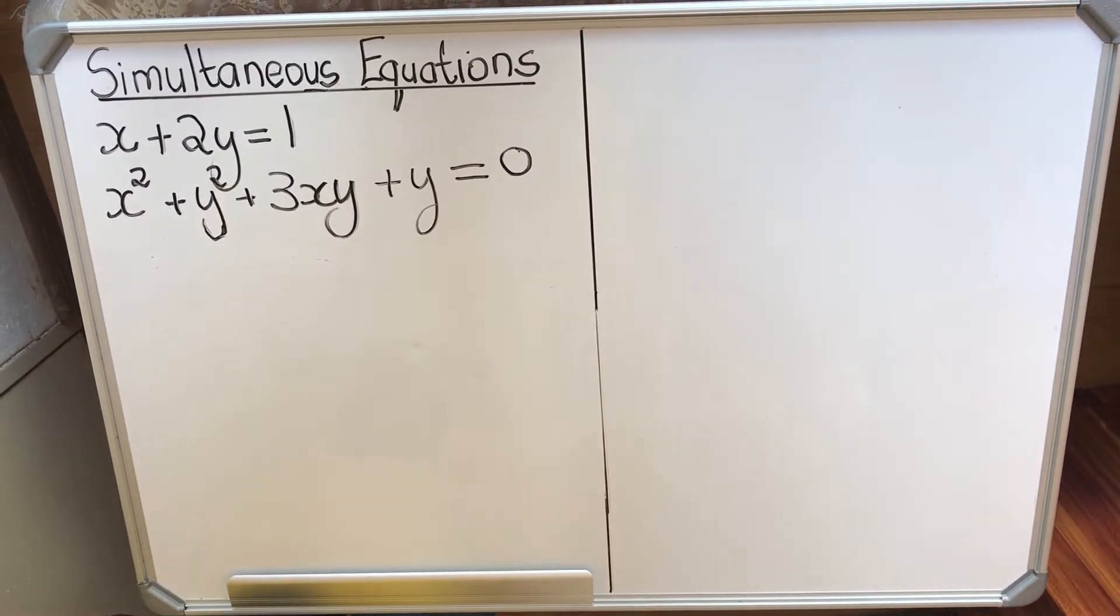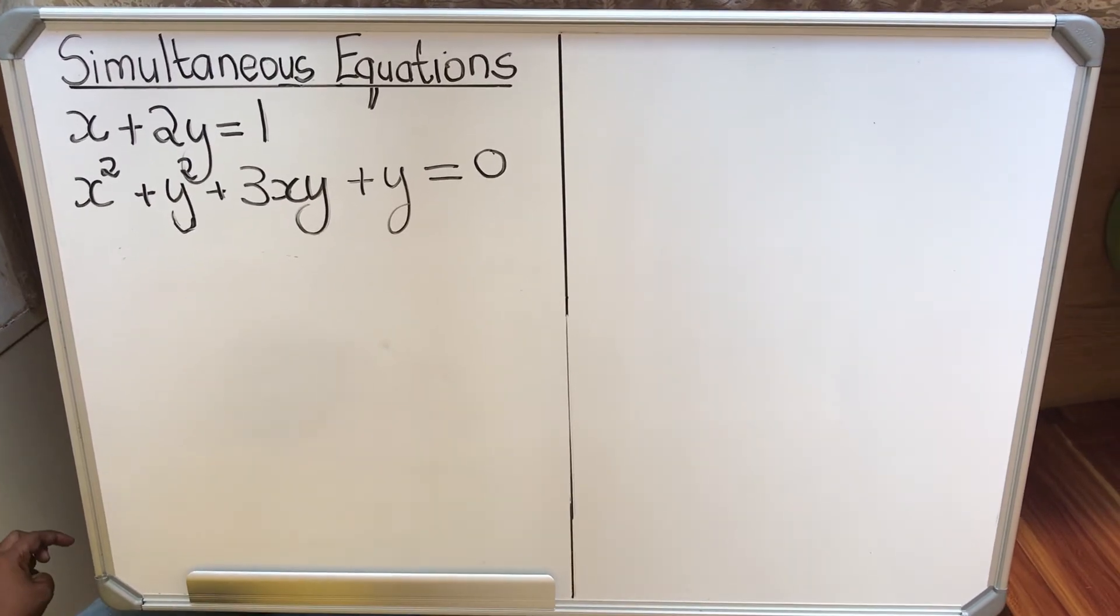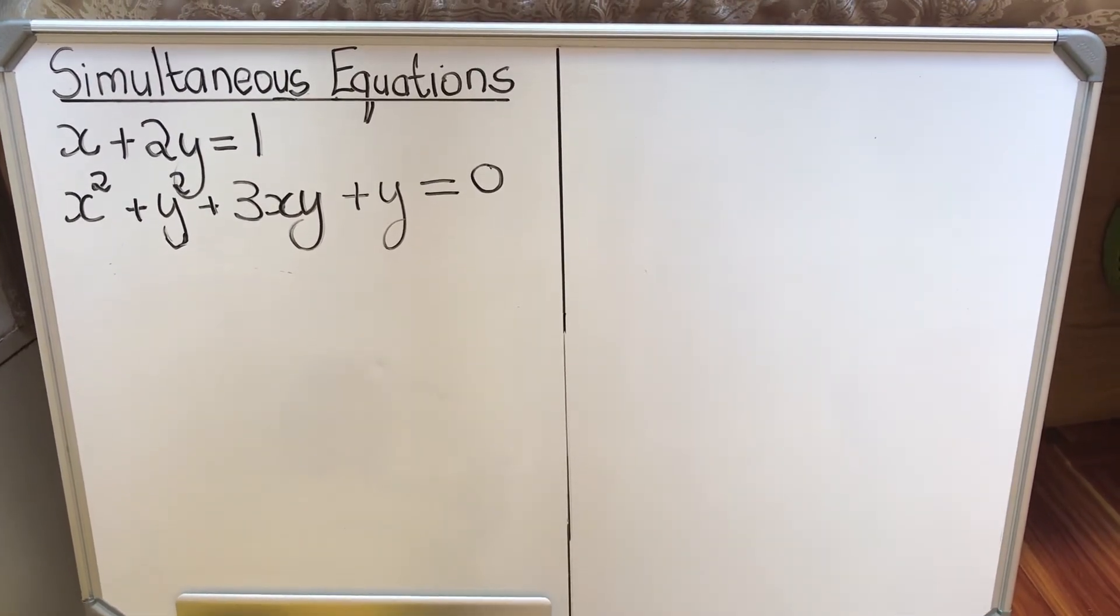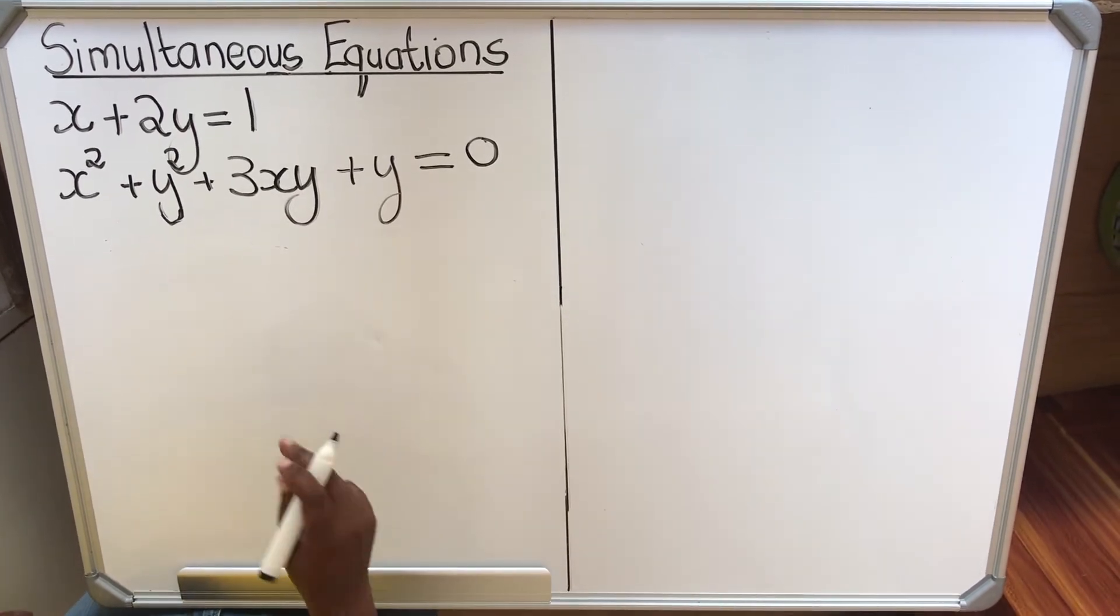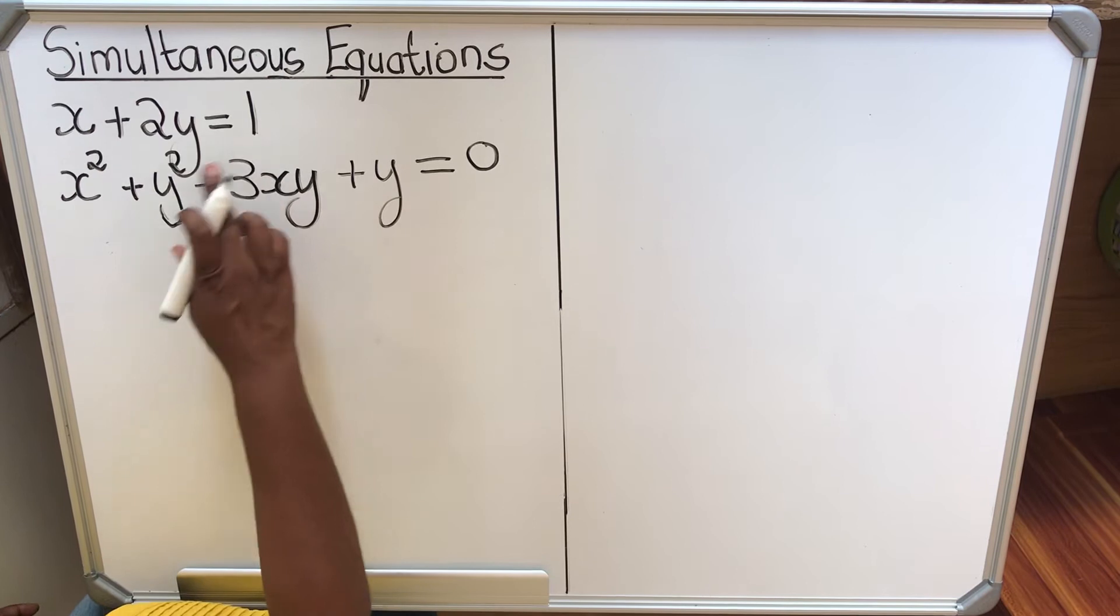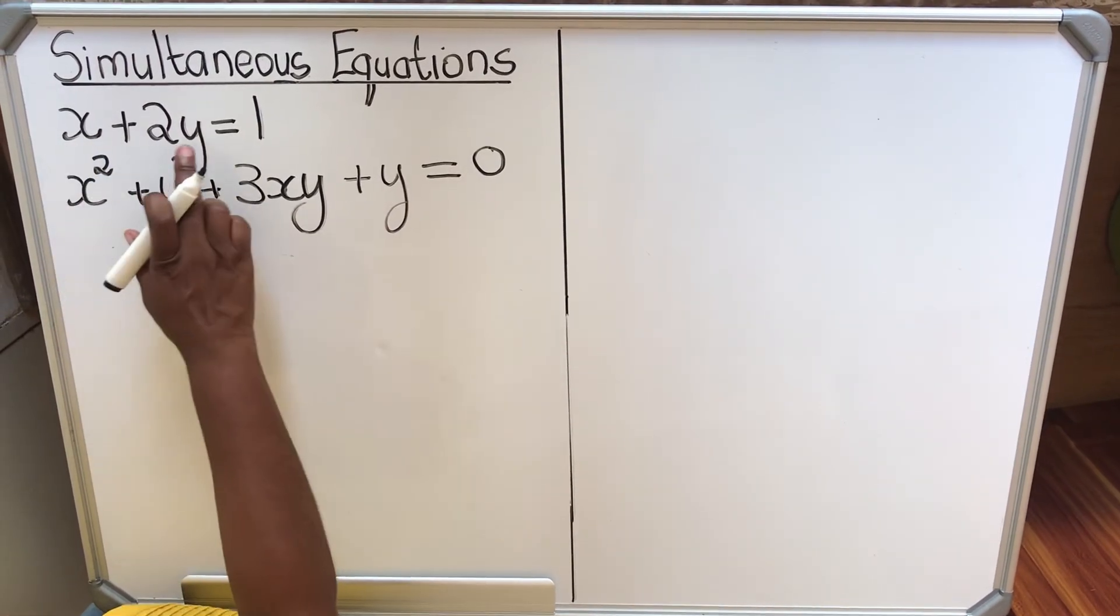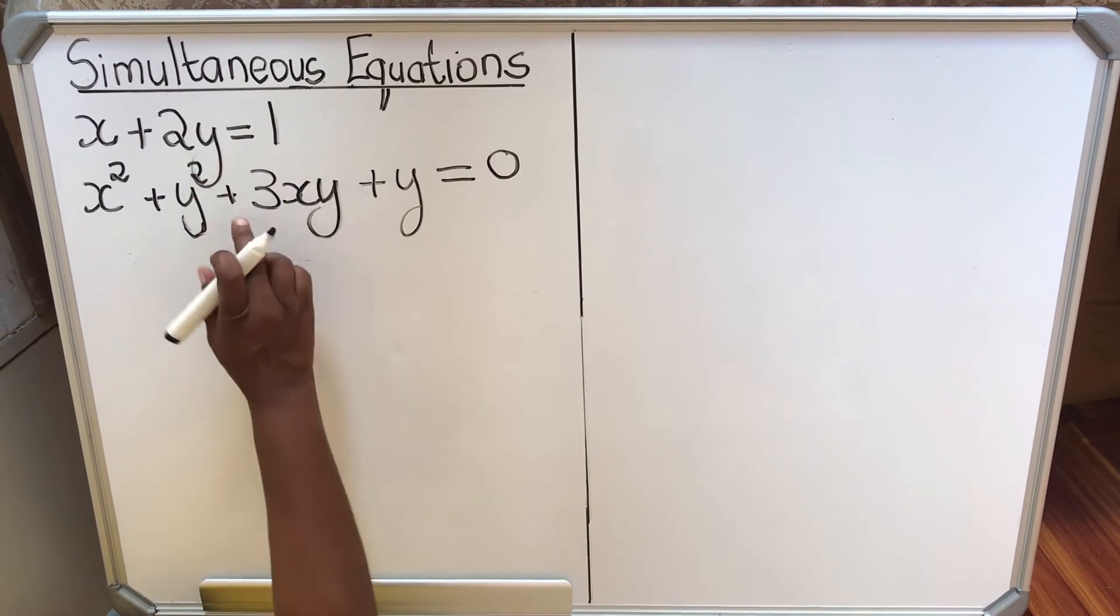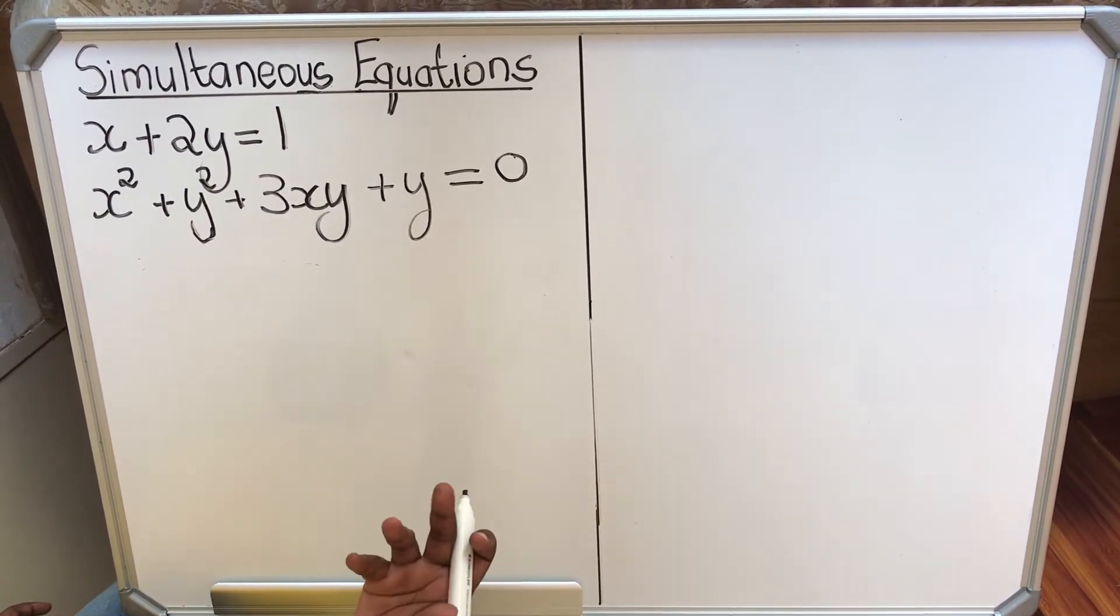Hello grade 11s. We are going to look at simultaneous equations. We have done simultaneous equations in grade 10, but in grade 10 both of them are linear. So in grade 11 we have one linear and one quadratic. In simultaneous equations we have two unknowns, x and y, and two equations. So both equations to solve for two unknowns.